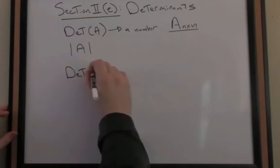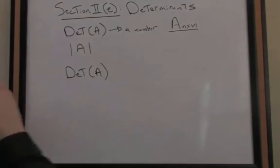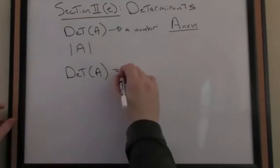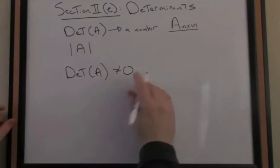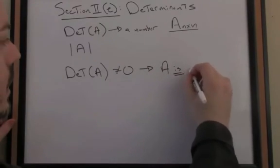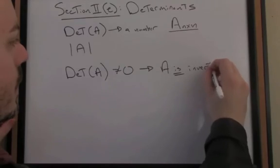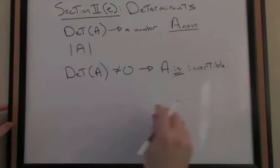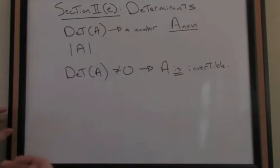In more detail, when I take the determinant of a matrix, if that determinant is not equal to zero, then this implies that A is invertible. There is some inverse out there such that when I multiply A by that inverse, I get back to the identity.